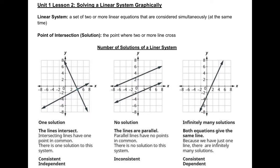On the first graph, let's define line 1 and line 2. When line 1 and line 2 do not have the same slope, then they will definitely have one point of intersection, which means they will have one solution.